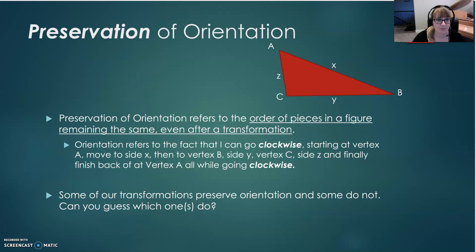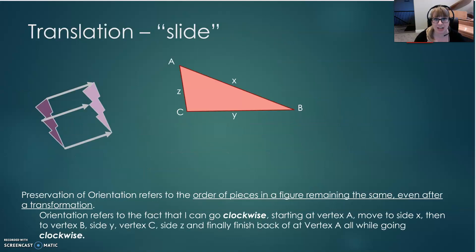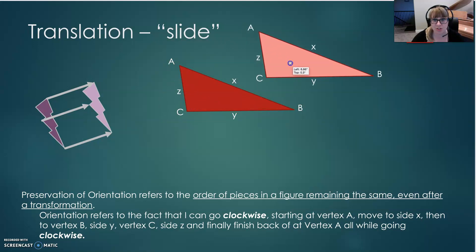All right, let's continue. We're first going to take a look at translation, or in other words, a slide. Remember, we're simply taking our figure and sliding it into its new position. Remembering that our original figure goes A to X to B to Y to C to Z and back to A, when I translate this figure and slide it to a new position, I've now relabeled it A'B'C' and sides X'Y'Z'.